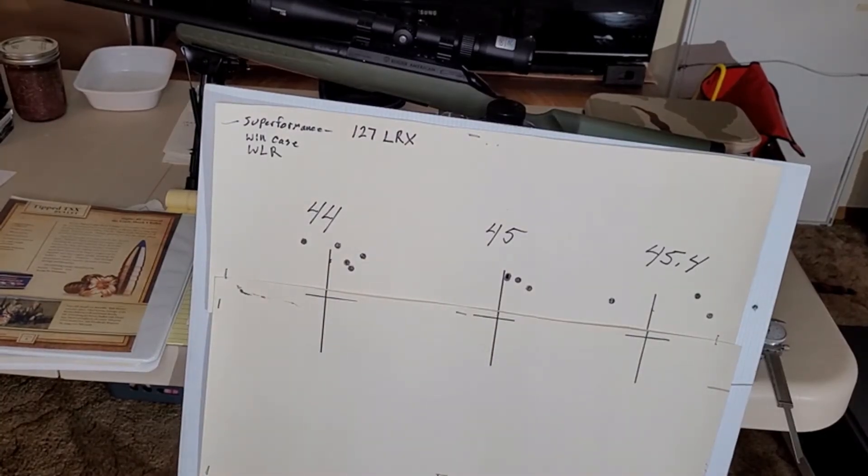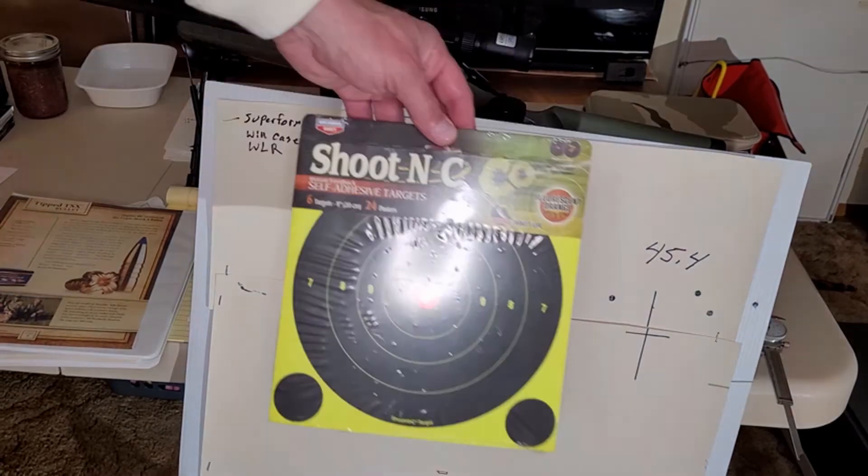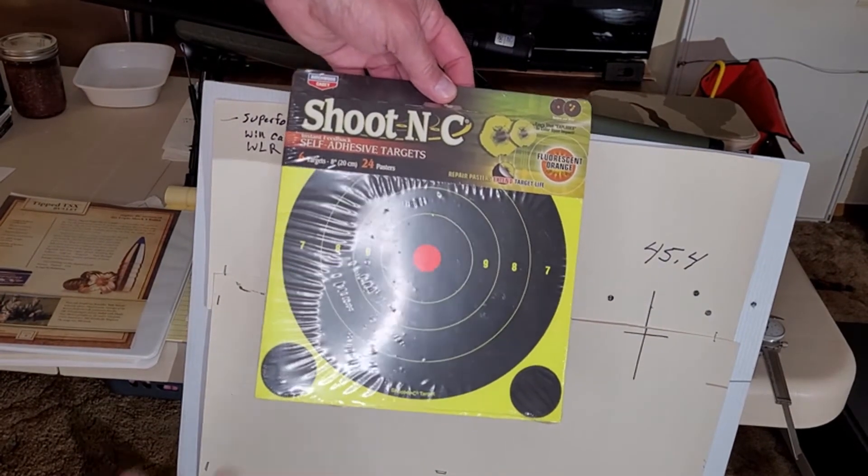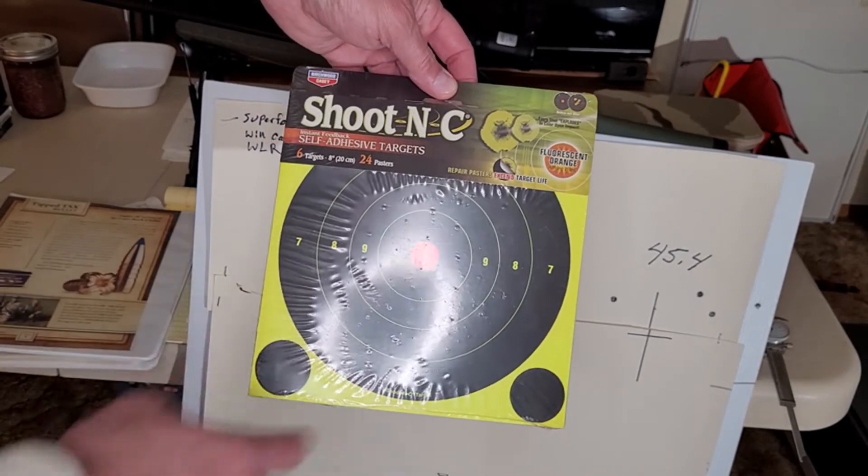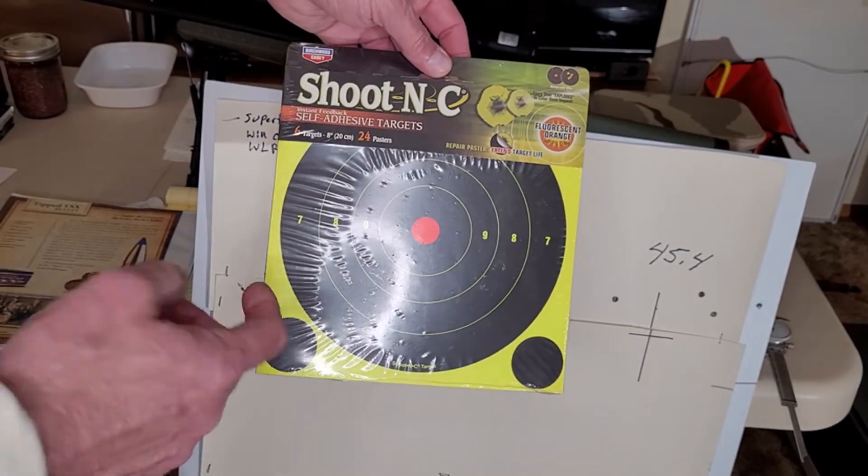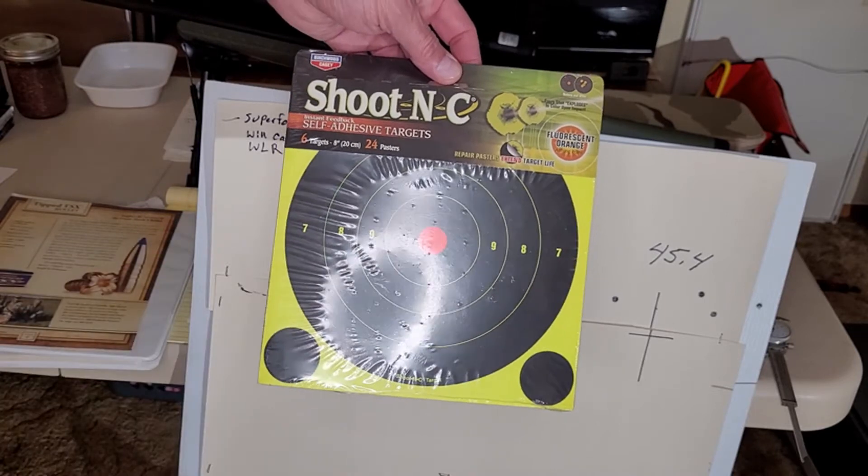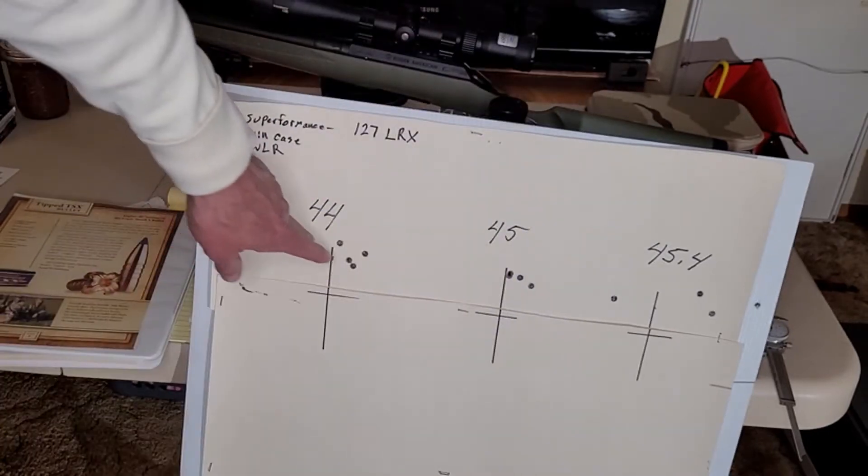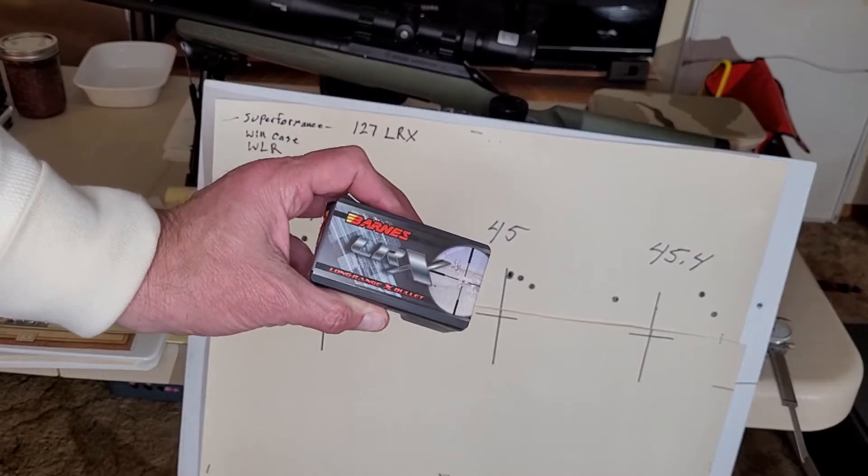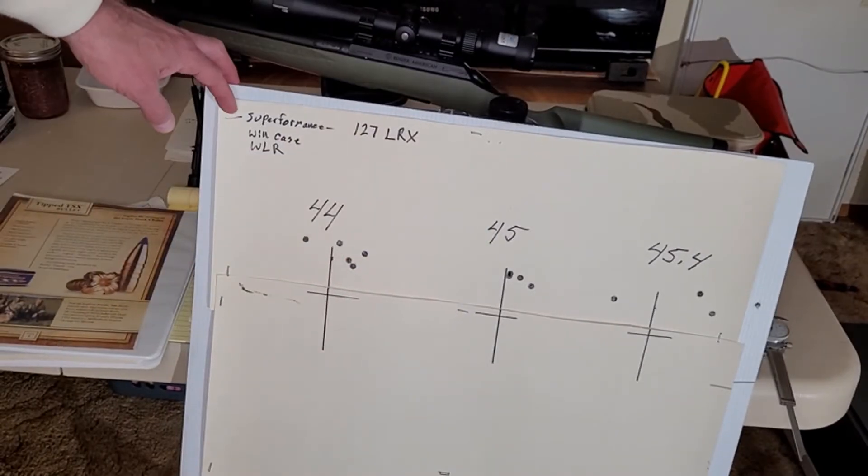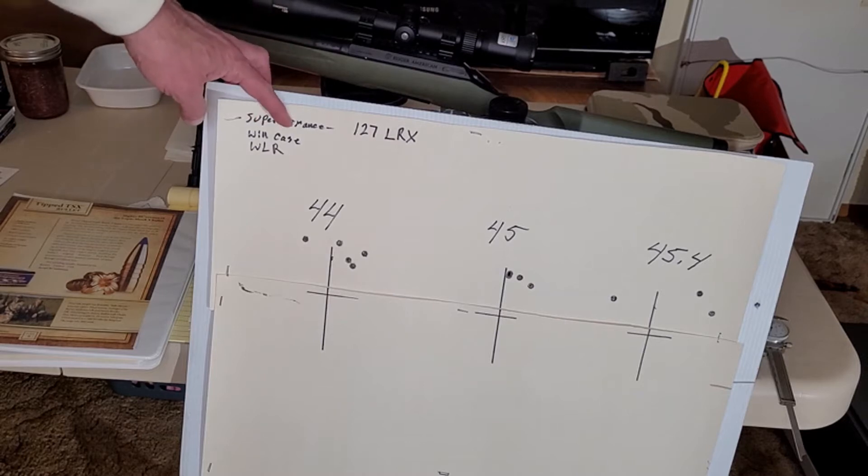I've quit buying the shoot and see targets. When you have a target like this, it is really difficult to line those crosshairs up precisely. I had no problem seeing my bullet impacts. 127 grain LRXs, Super Performance, Winchester cases, Winchester primers.